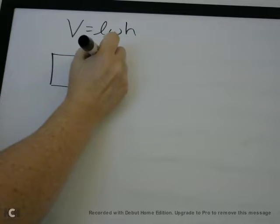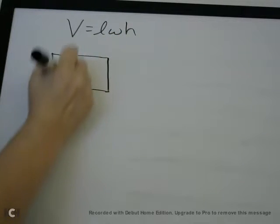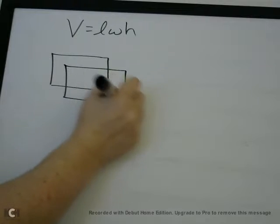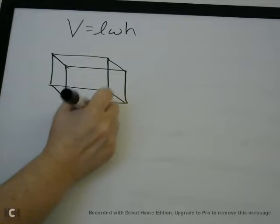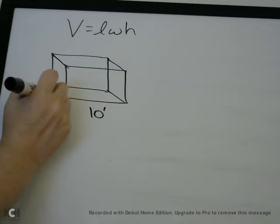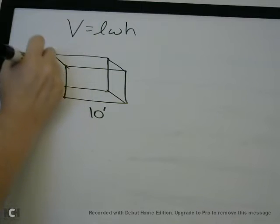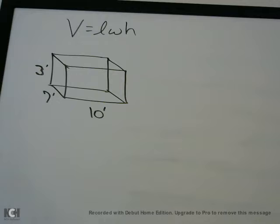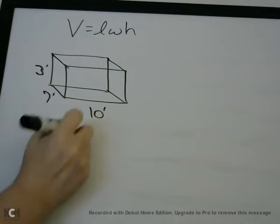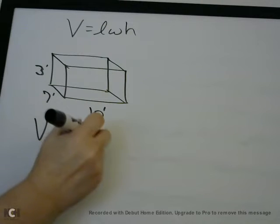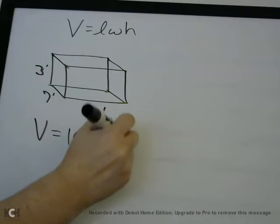A rectangular prism is just a box. So let's say we have a box — this is not going to be drawn to scale — and it's 10 feet by 7 feet by 3 feet. And it asks: what is the volume of this rectangular prism? All you do is pull out your formula sheet. Volume equals length, which is 10, times width, which is 7, times height, which is 3.